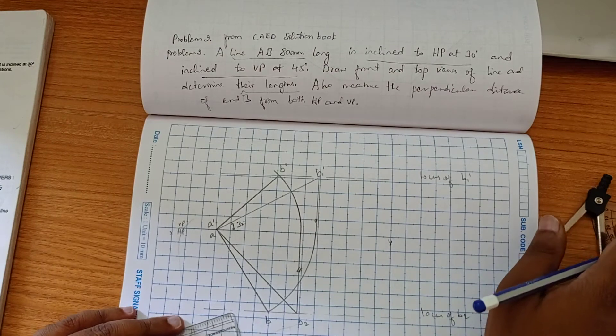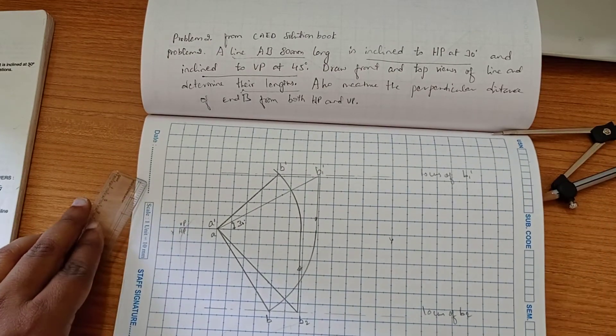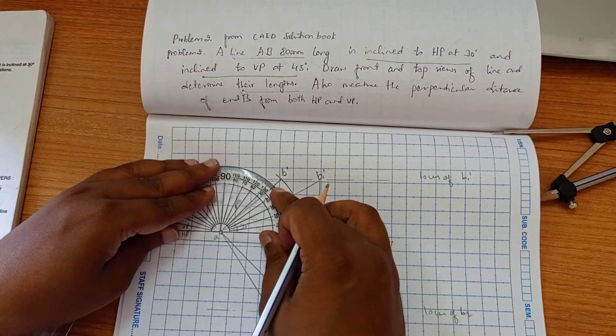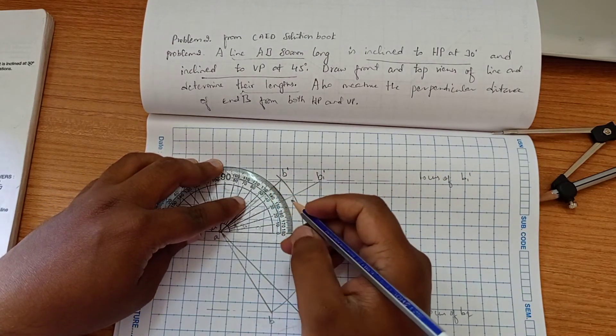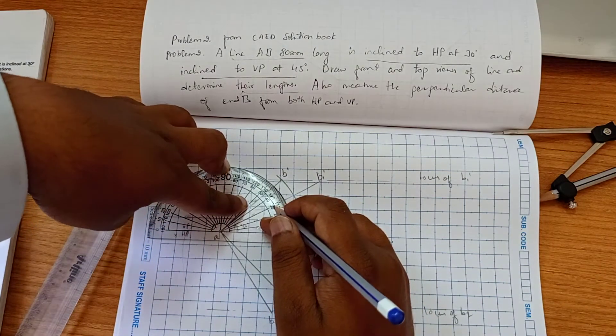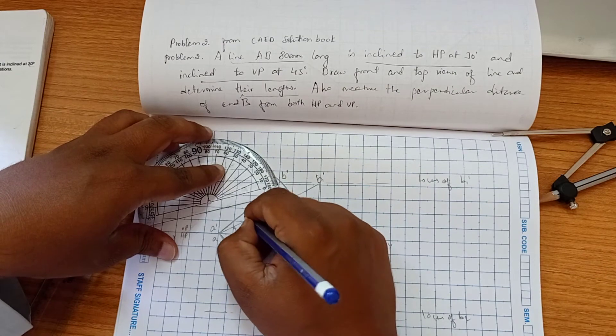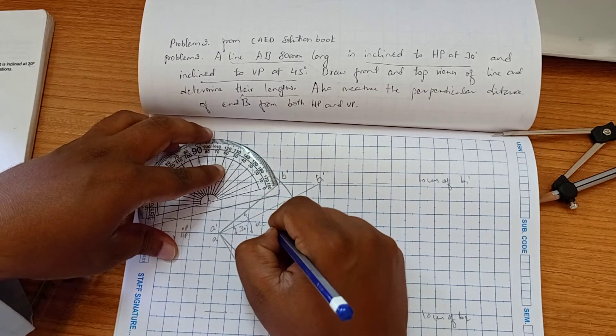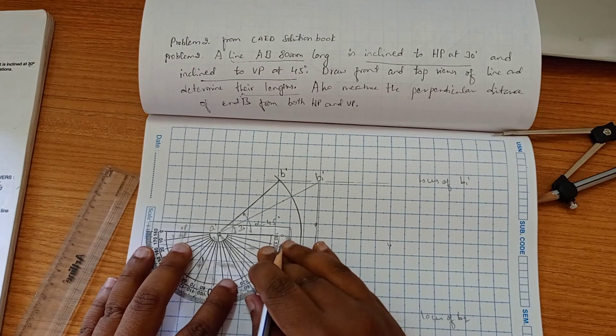There are two apparent lengths we got. Now we have to measure the angles - apparent length angles. So here we have 45 degrees. This is alpha - 35 degrees. And this is beta.